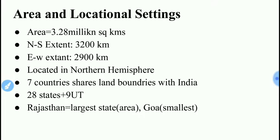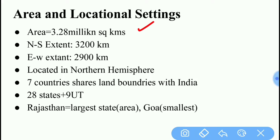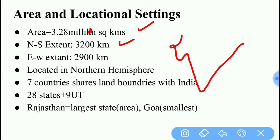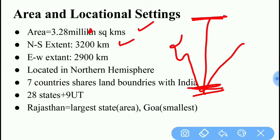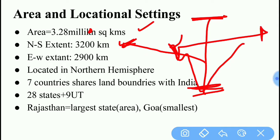Starting with today's lesson, the first thing I am going to discuss is about the area and locational setting of India. The total area of India is 3.28 million square kilometers. When we talk about the north-south extent — from Kashmir to Kanyakumari — this extent is 3,200 kilometers. While from Gujarat to Arunachal Pradesh, the east-west extent is 2,900 kilometers.